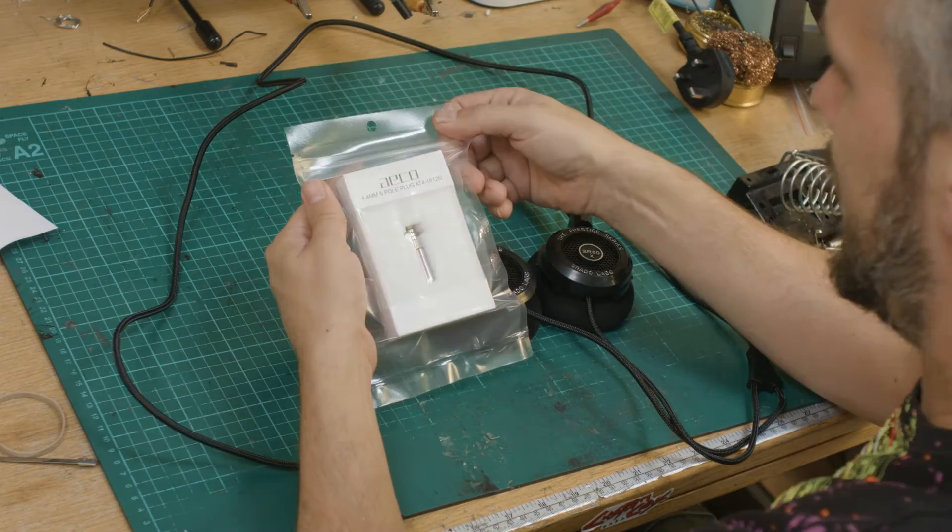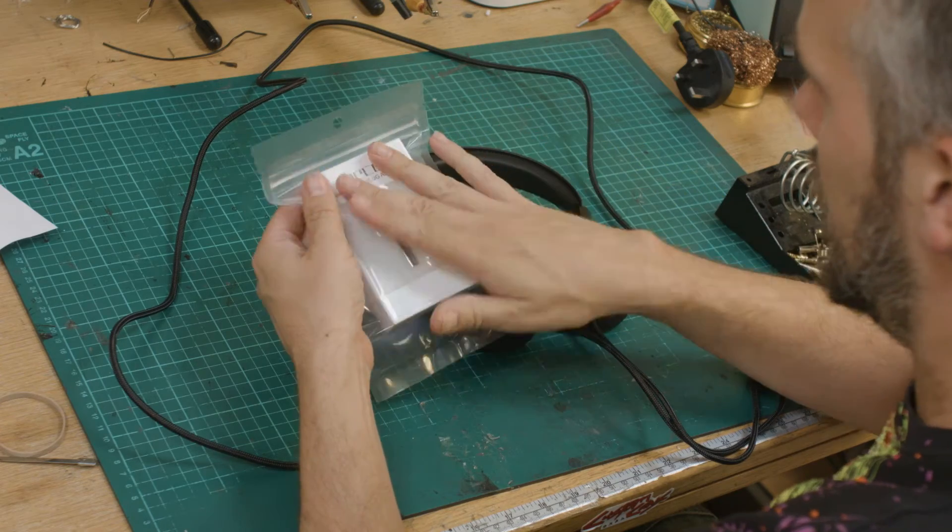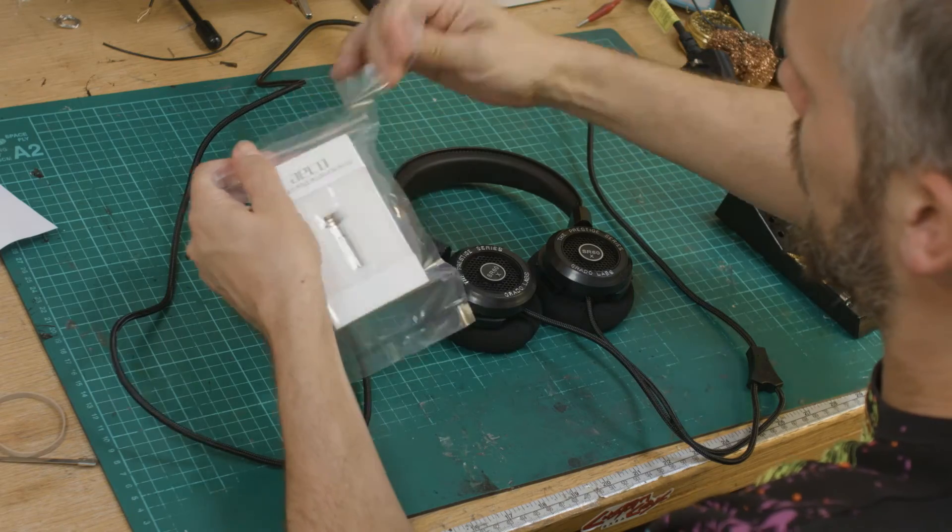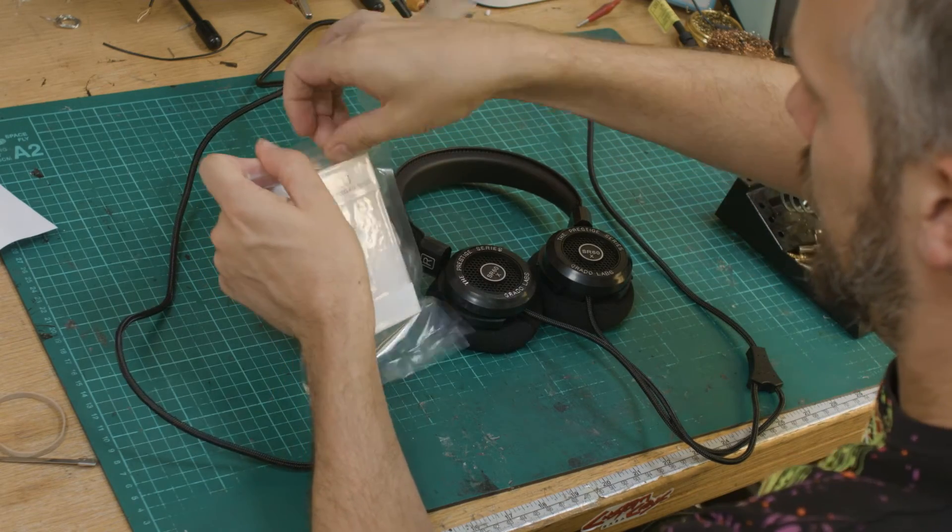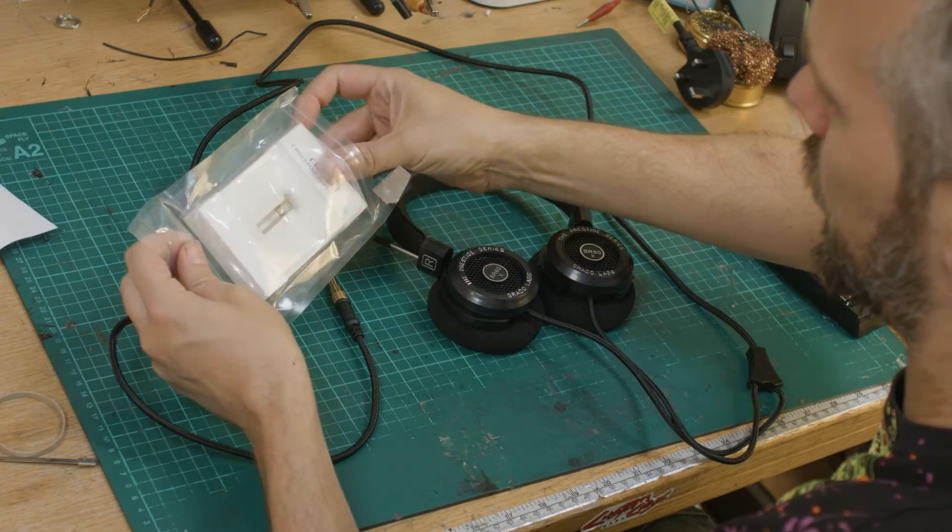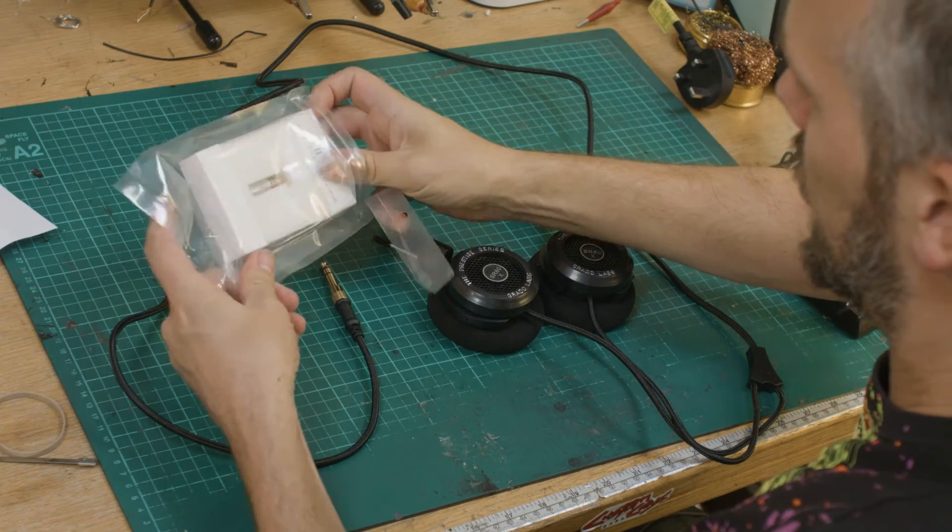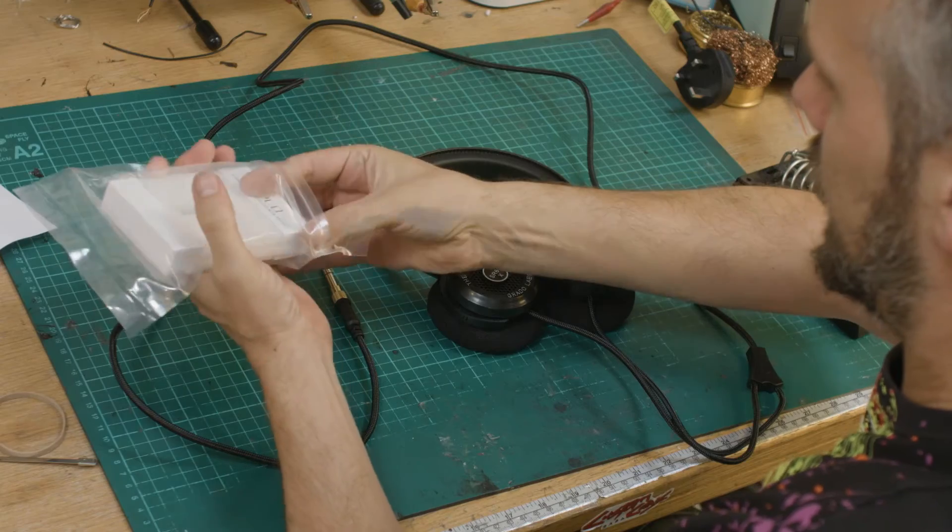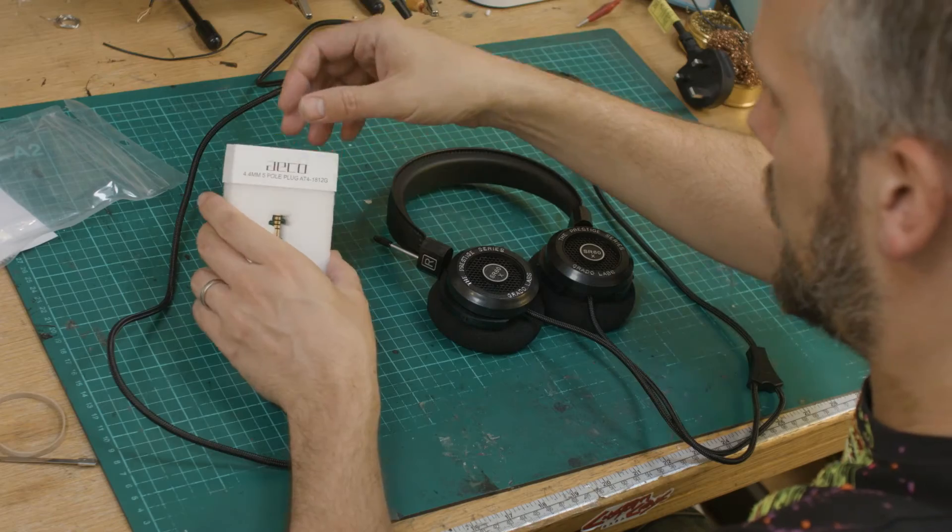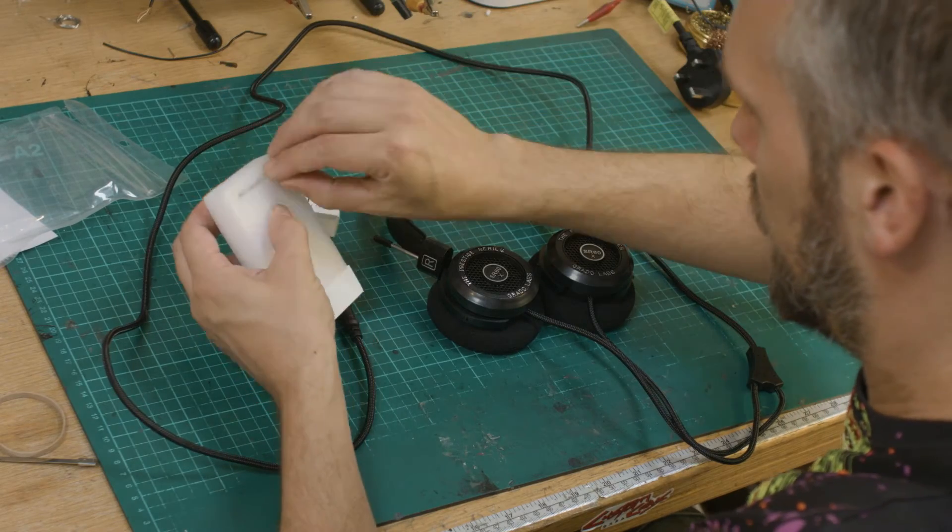So this is how the ICO jack comes in the retail packaging. It's a relatively expensive jack, so you get some pretty fancy packaging. I wish there was a little bit less wasted plastic. This could all come in a nice little cardboard box or something, so that might be something for future development. Less plastics, and I don't think it needs to have quite such a lot of packaging. There we go, ICO five-pole jack.